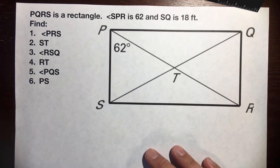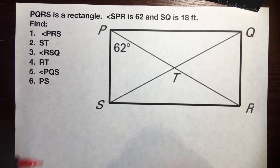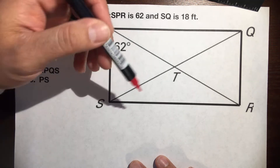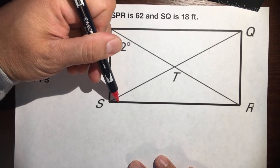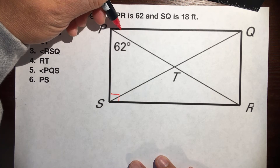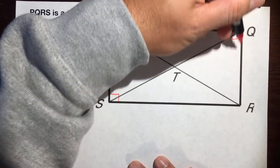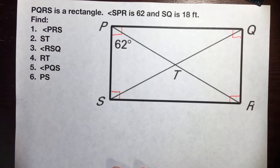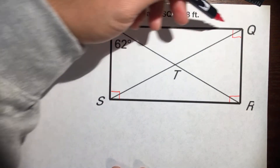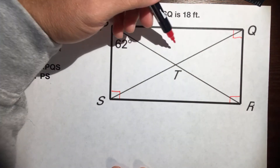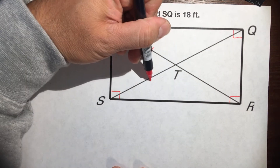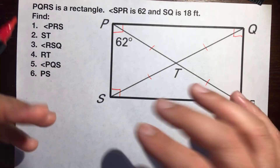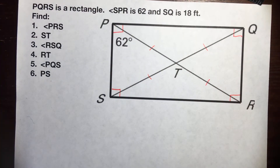Here's how you do this. A rectangle is a parallelogram and a special one, so all four angles are 90 degrees. Let's put the little square box at each corner. And let's remind ourselves that the diagonals are congruent and the halves are congruent, so I'm going to put a tick mark on each half of both diagonals. We also know the five facts about the parallelogram.